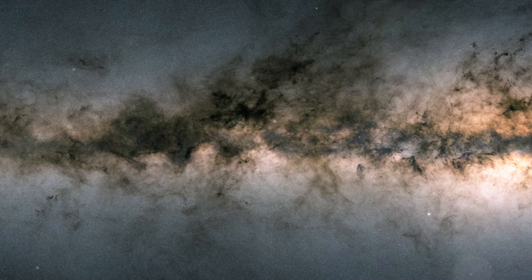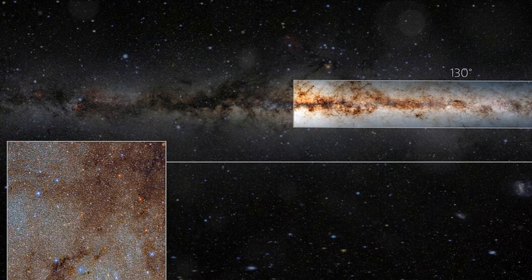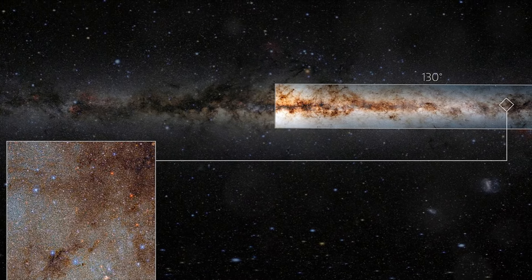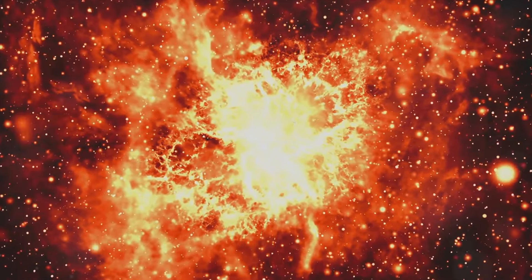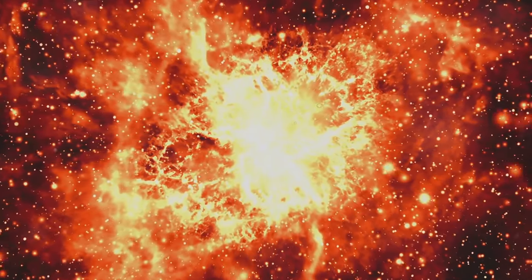This flattened disk is the galactic plane. Interestingly, most stars are born here in the dense, swirling clouds of gas and dust. These stellar nurseries are also prime locations for planet formation.